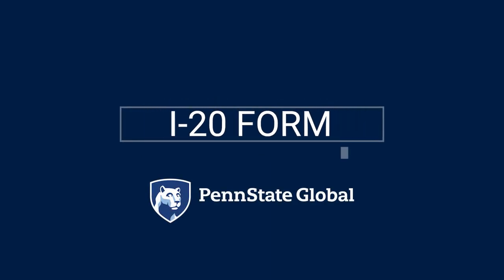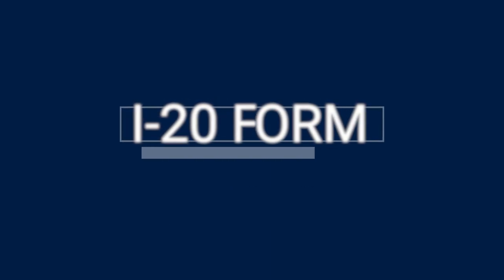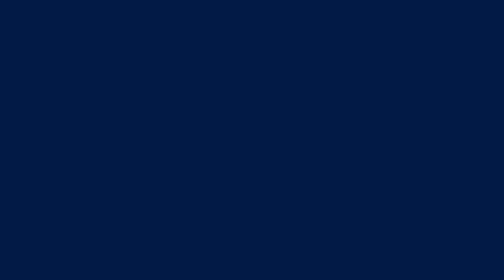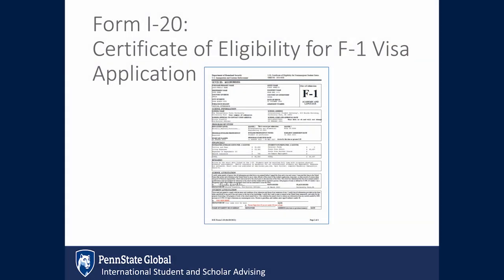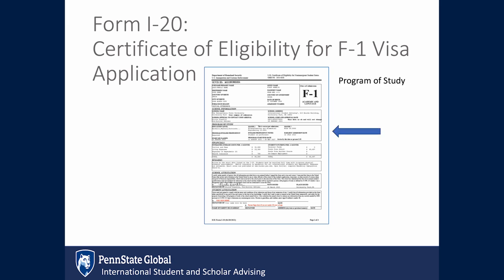Let's walk through your Form I-20. This is a sample of your Form I-20, also known as the Certificate of Eligibility for the F-1 visa application. We will review the personal information, school information, your program of study information, and the financial information.